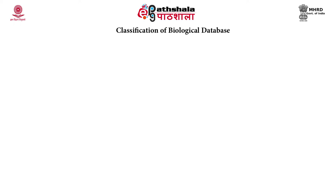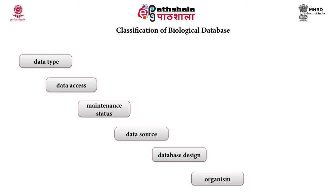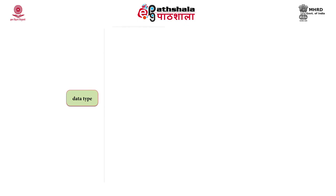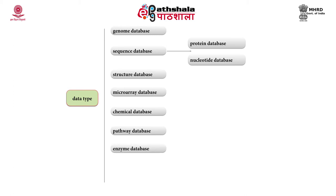Databases are classified on different bases. The first basis is on the type of data; the second is on data access; thirdly on the basis of maintenance status, data source, database design, and organism. On the basis of data type, databases are: genome database, sequence database, structure database, microarray database, chemical database, pathway database, enzyme database, disease database, and literature database. Sequence databases are further divided into protein databases and nucleotide databases.